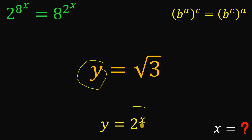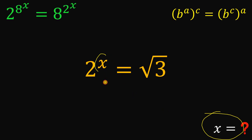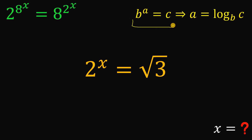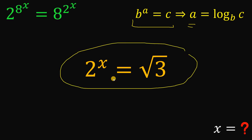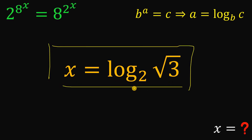Now this y is also the same thing as 2 raised to the power of x, so we replace y with 2 raised to the power of x, because our goal is to solve for x. To solve for x, we convert this exponential equation into a logarithmic equation. Take note: when we have b raised to the power of a equals c, we can rewrite this as a equals logarithm of c to the base of b. So this exponential equation can be rewritten as x equals logarithm of square root of 3 to the base of 2. This is the value of x.